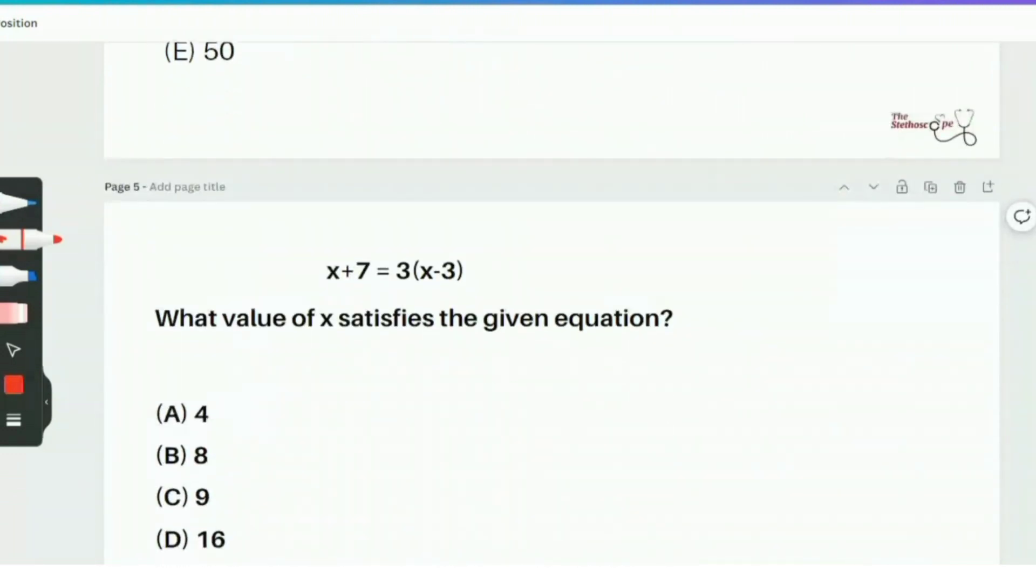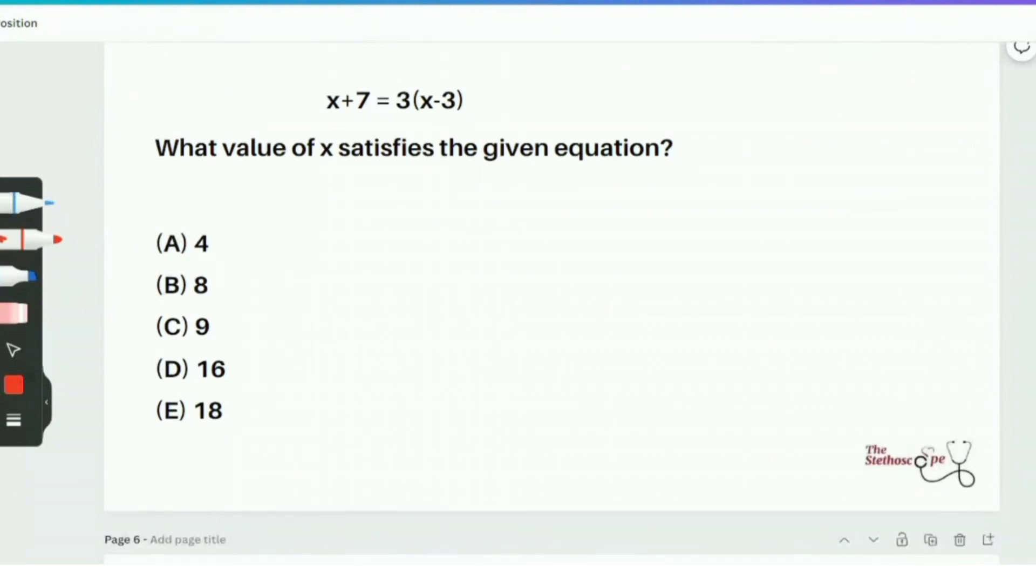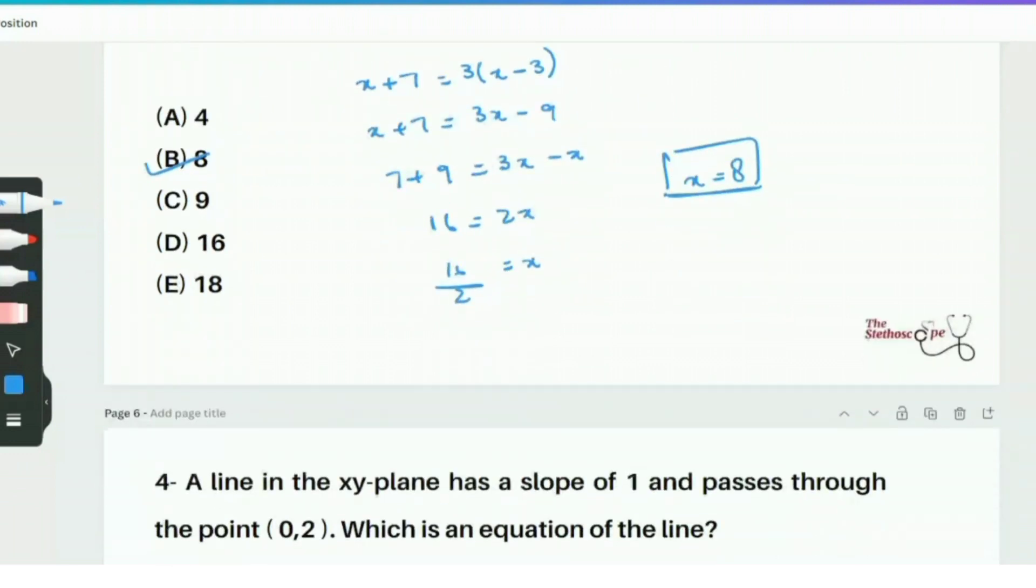Now moving towards question number 3, which is a very basic algebra question. This question says that x plus 7 is equal to 3 times x minus 3. What is the value of x that satisfies the given equation? Let's solve this question step by step. Now we'll distribute 3 on the right side. That's x plus 7 is equal to 3x minus 9. Then we'll add 9 to both sides and subtract x to isolate the variable which gives 16 equals 2x. We can then just simply write it as x equals 8. Therefore, option B is the right answer.